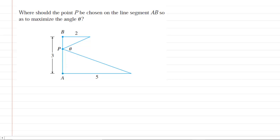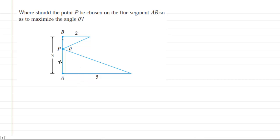For example, the segment AP we can label X. Since the entire segment AB is equal to 3 and this portion is X, that means this leftover portion BP is going to have a length of 3 minus X. We also want to identify a couple of additional angles: this angle right here we're going to call alpha, and then this angle here we can call beta.